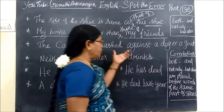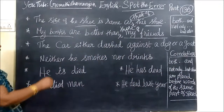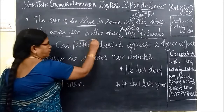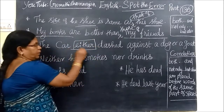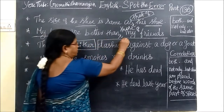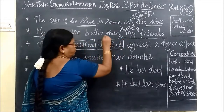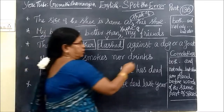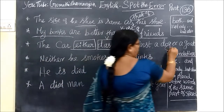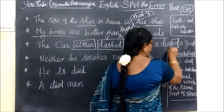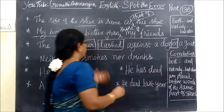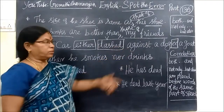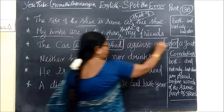This is the correlative. The car either dashed against a dog — 'dashed against' is a verb. Then 'or' follows. Either/or — this is the correlative. They must be placed before words of the same part of speech.